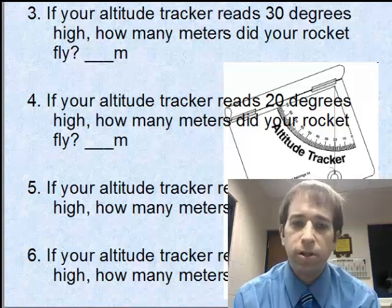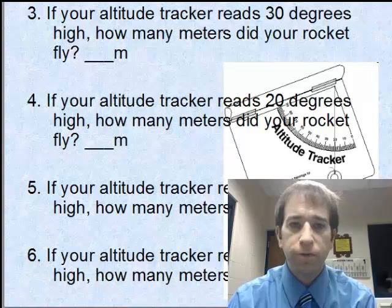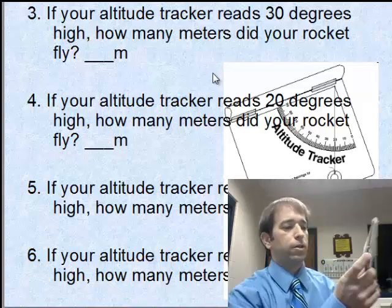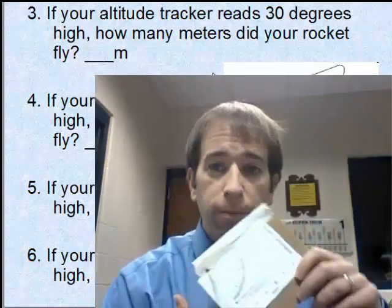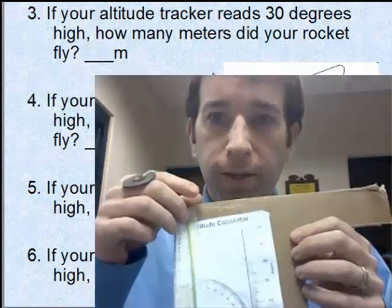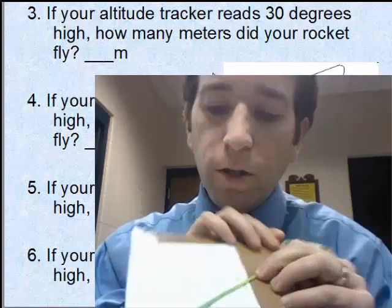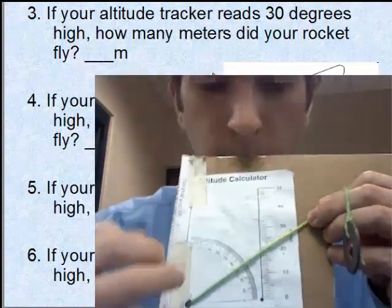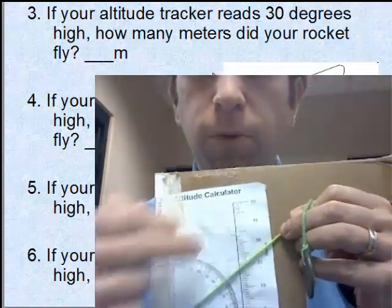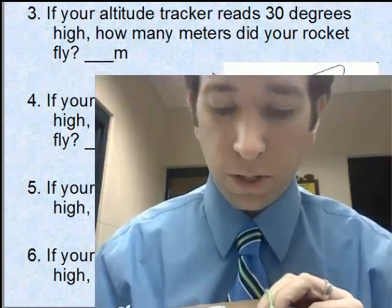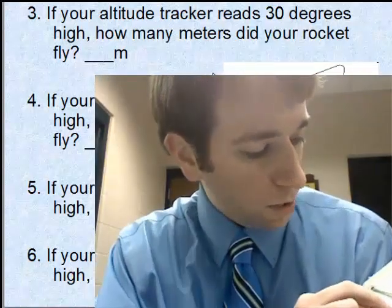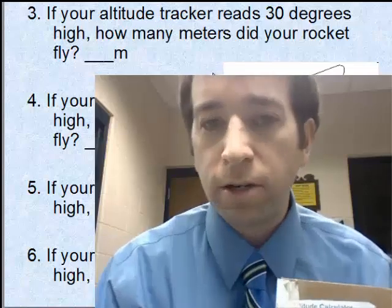Let's do the first one together. If your altitude tracker reads 30 degrees, how many meters did your rocket fly? That's saying you watch the rocket go up, flip it over on the back, pull your string through 30 degrees, and where your string matches up with the black line is how many meters high your rocket went. So in this case, 30 degrees is roughly 18 meters high. If you put 17 meters or 19 meters, I'll accept that too.